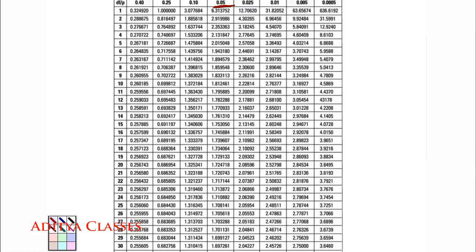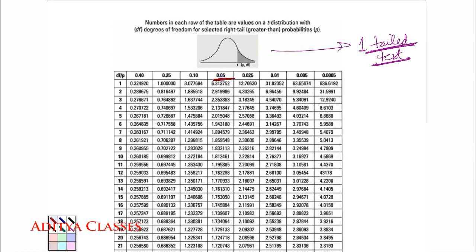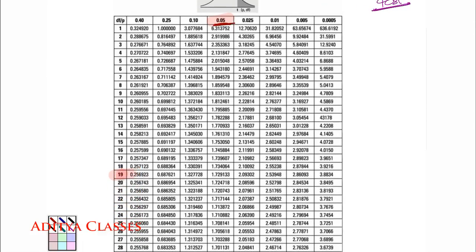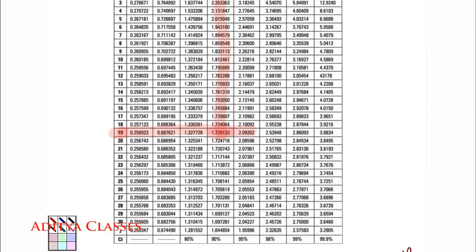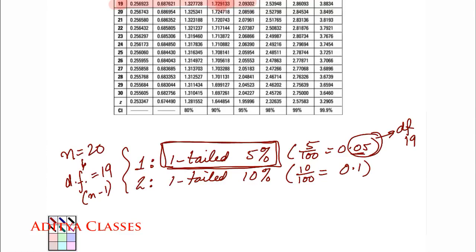So first question is 1-tailed 5% with n 20. So it becomes 0.05 with degrees of freedom, 19, 0.05 with degrees of freedom, 19. This will give you your value. This is your value, 1.729133. This is your t value.